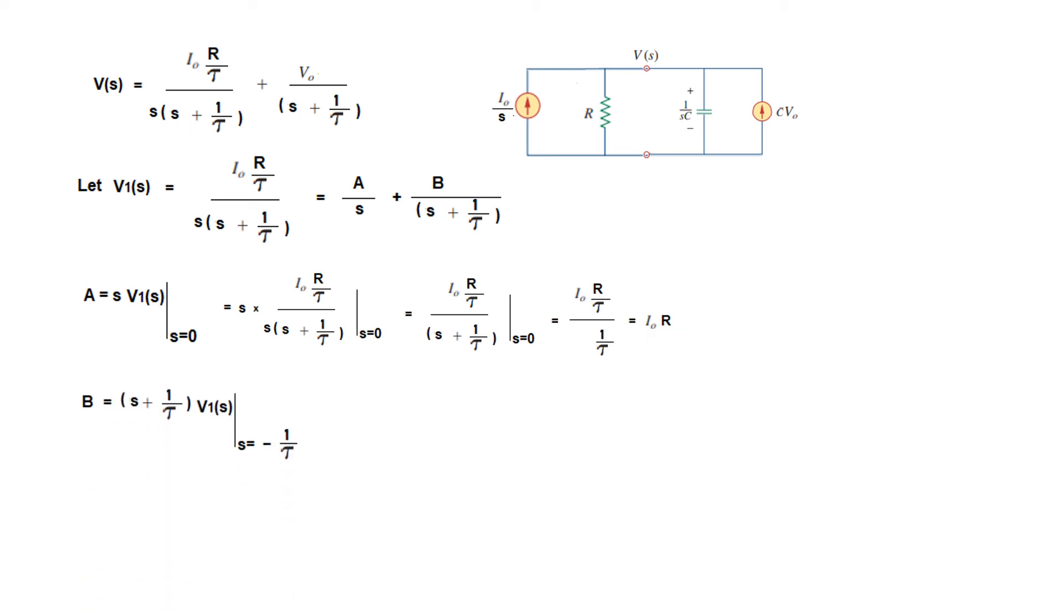Same way we solve for B. The second term multiplied by V1(s), setting it equal to 0 results in s equals minus 1 over tau. Putting this, the final answer for B is minus I0R.